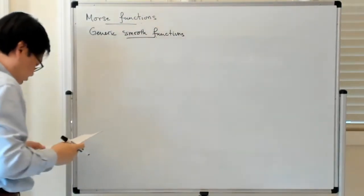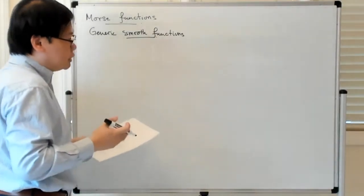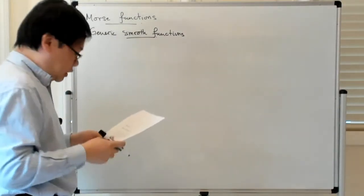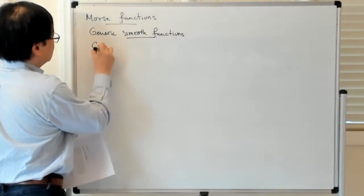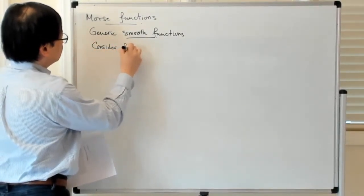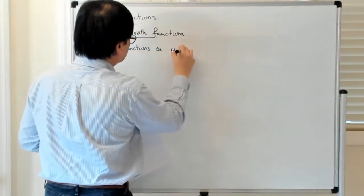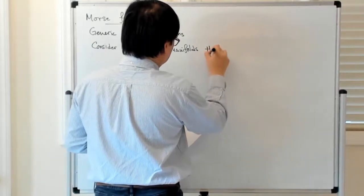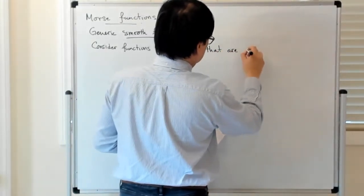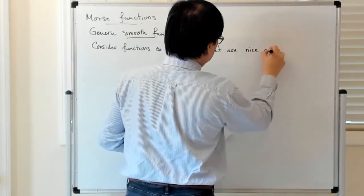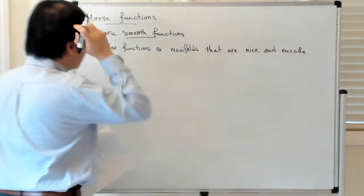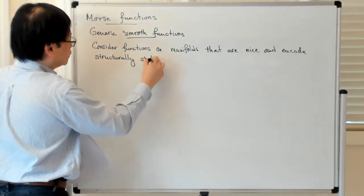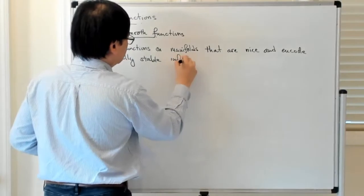The basic idea is that we're going to consider functions on manifolds which encode things which are structurally stable — sort of stable information about the manifold.